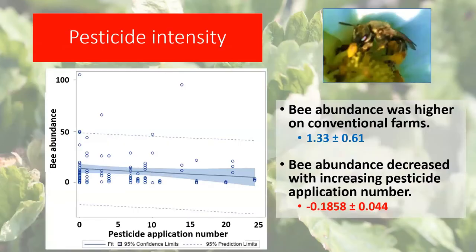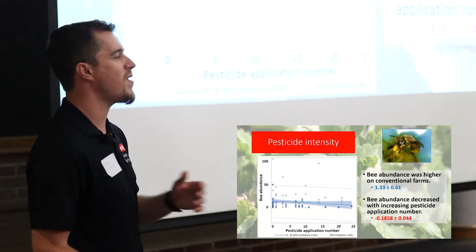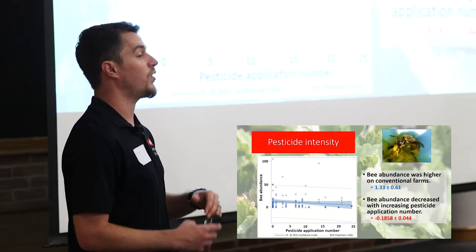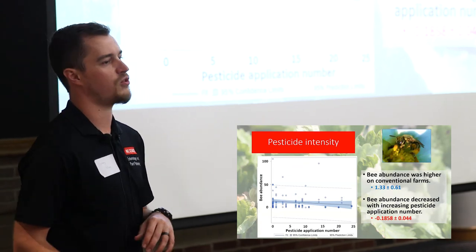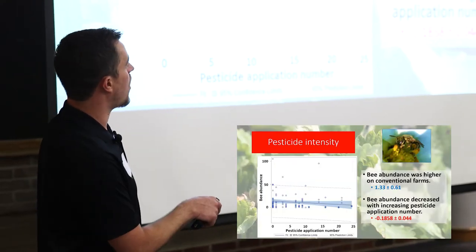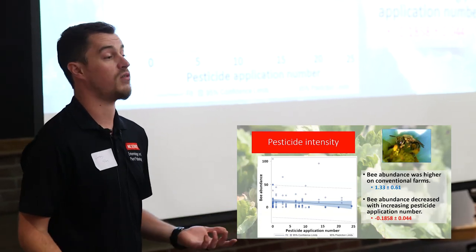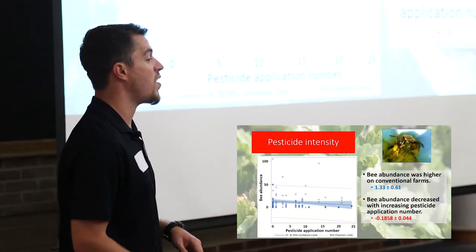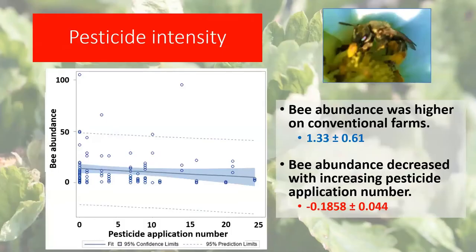Regarding pesticide intensity, there was a decrease in bee abundance with increasing pesticide application number — though some high-intensity growers declined to share their pesticide records, so the effect is likely a bit stronger. The majority of applications in strawberries are fungicides, with occasional insecticide or miticide applications and generally no herbicides, with constant rotation of modes of action. Interestingly, something about conventional management actually favored an increase in bee abundance — the magnitude of that positive effect was larger than the deficit caused by increasing application number. It may relate to crop diversification or other non-pesticide aspects of farm management.